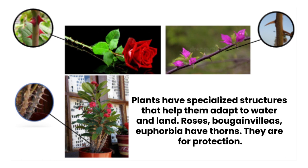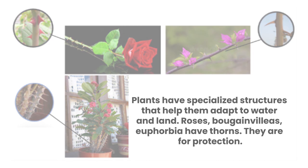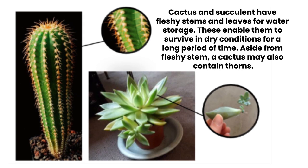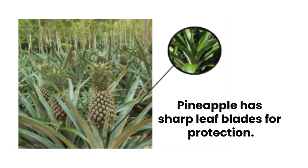Plants have specialized structures that help them adapt to water and land. Roses, bougainvilleas, and euphorbia have thorns for protection. Cactus and succulents have fleshy stems and leaves for water storage, enabling them to survive in dry conditions for a long period of time. Aside from fleshy stems, a cactus may also contain thorns. Pineapple has sharp leaf blades for protection.